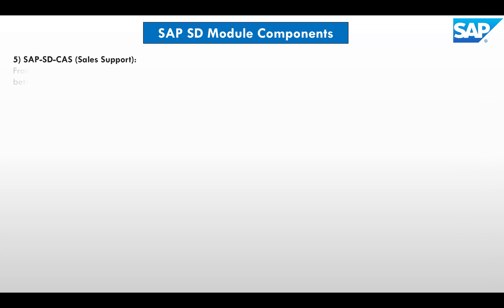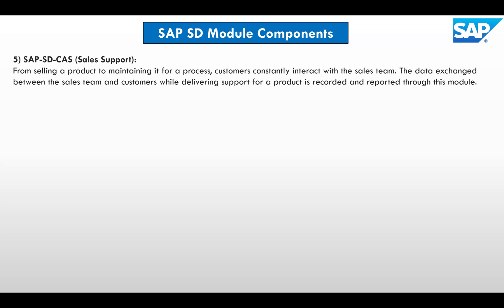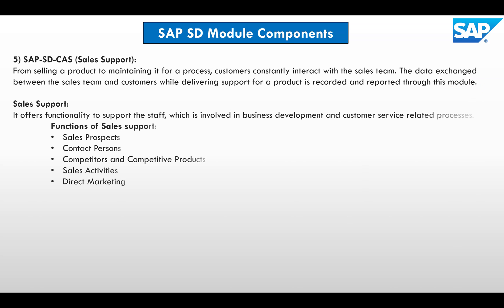Then we have Sales Support. From selling a product to maintaining it, customers constantly interact with the sales team, so it is very important to provide after-sales support, which is maintained by the SD module. The data exchange between the sales team and the customer while delivering support is recorded and reported through this module. The major functions of sales support include sales prospects, contact persons, competitors and competitive products, sales activity, and direct marketing.